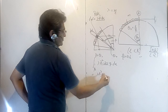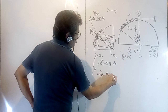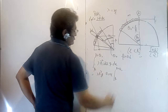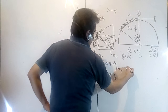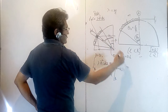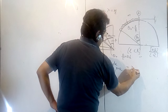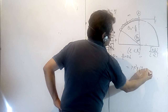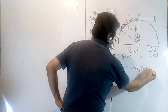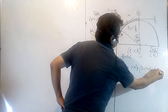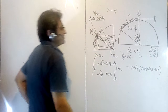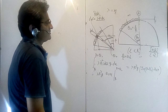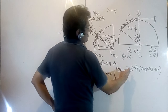So the potential energy at general angle beta is λR²G multiplied by [sin(beta + theta_0) − sin(beta)]. This is the potential energy of the chain when its lower end makes angle beta with the vertical.